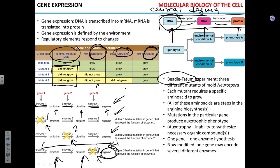Beadle and Tatum were able to identify mutations in three different genes and showed that each mutant gene matched a dysfunctional enzyme. By the way, saying 'mutant enzyme' is grossly wrong — mutations can only be in the gene. The protein can be altered, dysfunctional, or faulty — but not mutant.